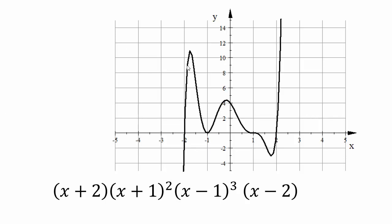A bit more terminology: when the graph rises and turns back down, those peaks are called local maximums. The valleys at the bottom are called local minimums. You need calculus to find these exact points when they're not at intercepts. This is why the even power at x equals negative 1 could be 2, 4, 6, or any even power — without calculus, we can't determine exactly which one matches the graph.